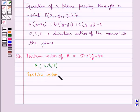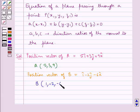the position vector of point B is i cap minus 2j cap minus 6k cap, so the coordinates of point B would be 1, minus 2, minus 6.